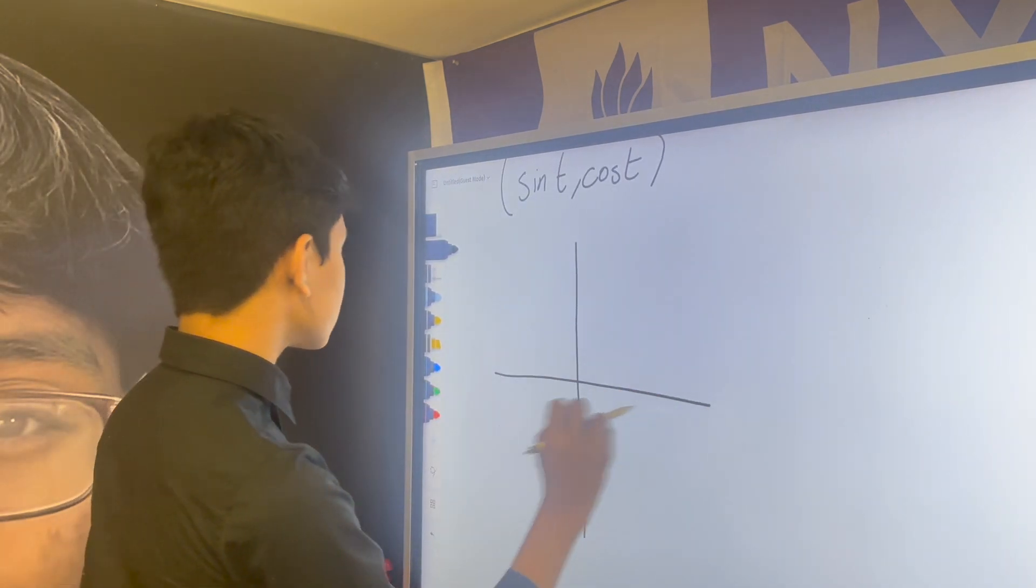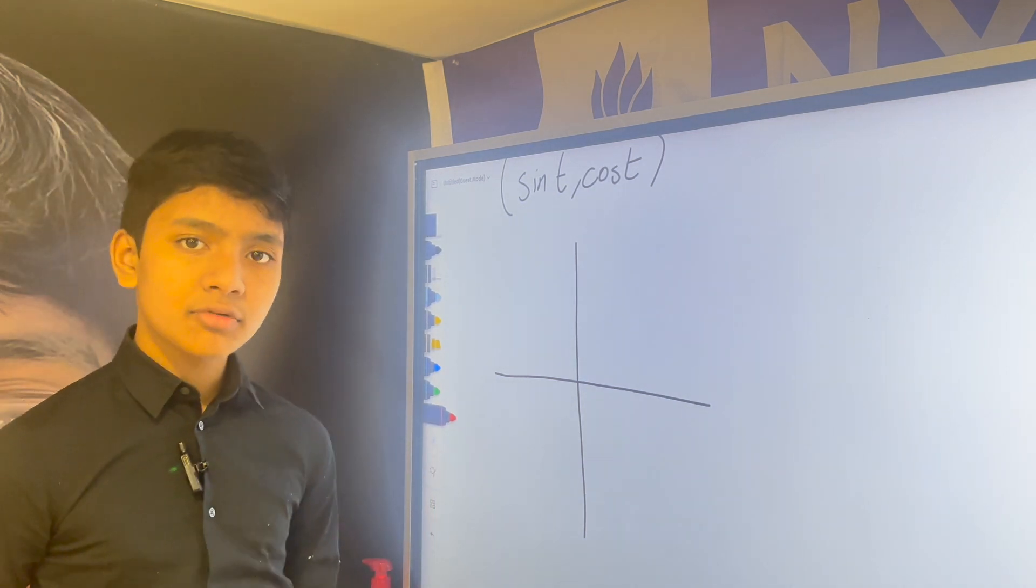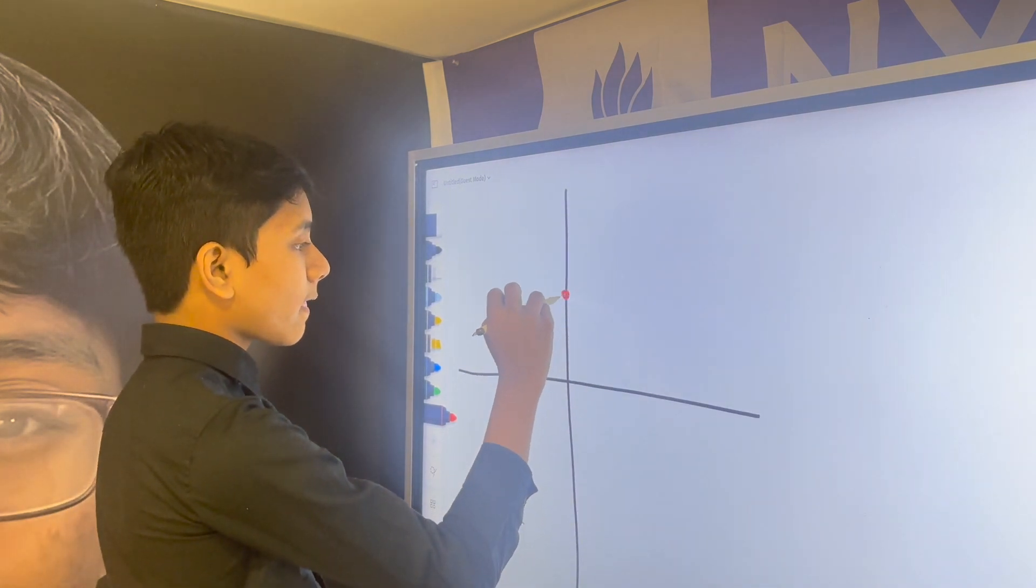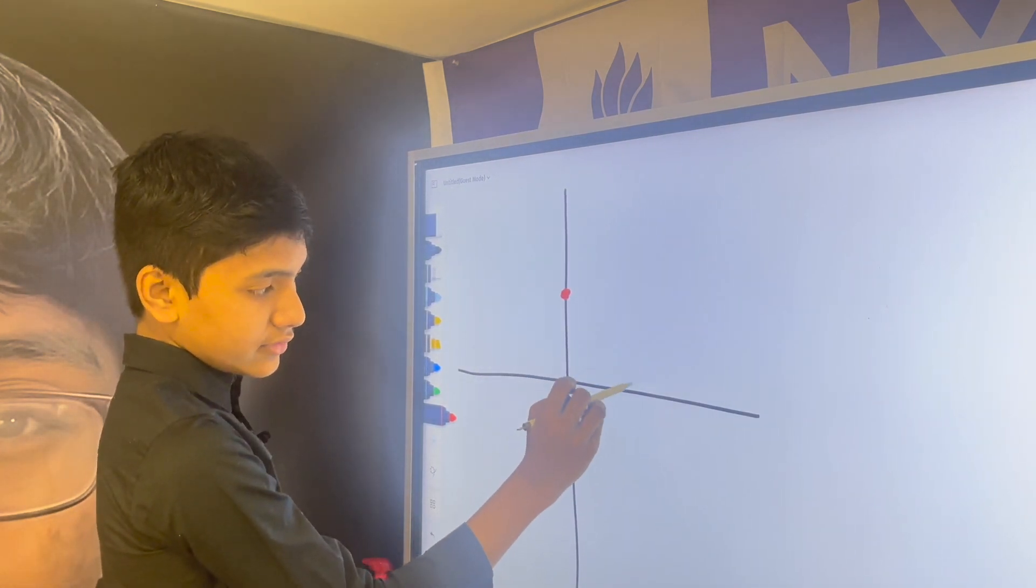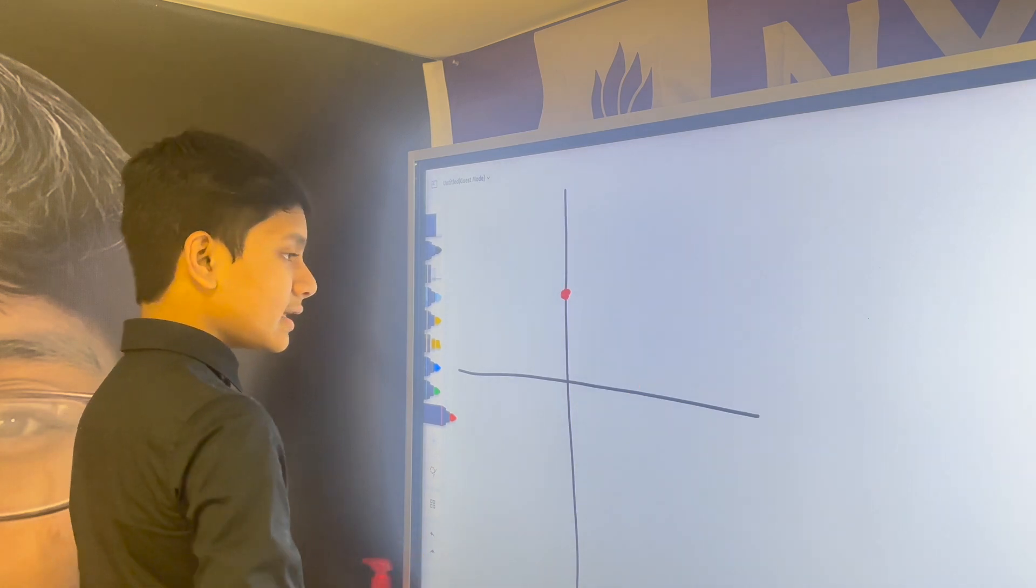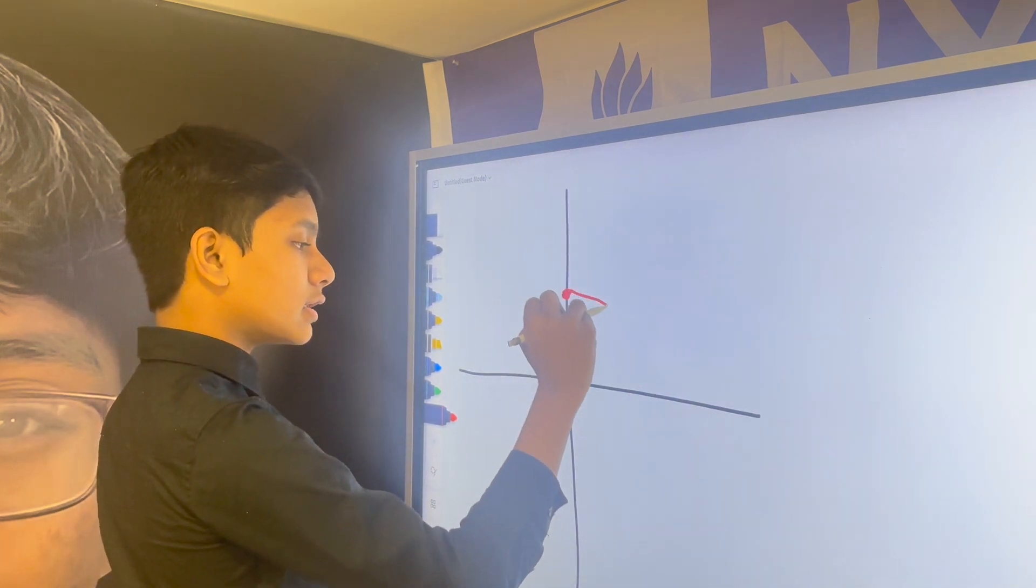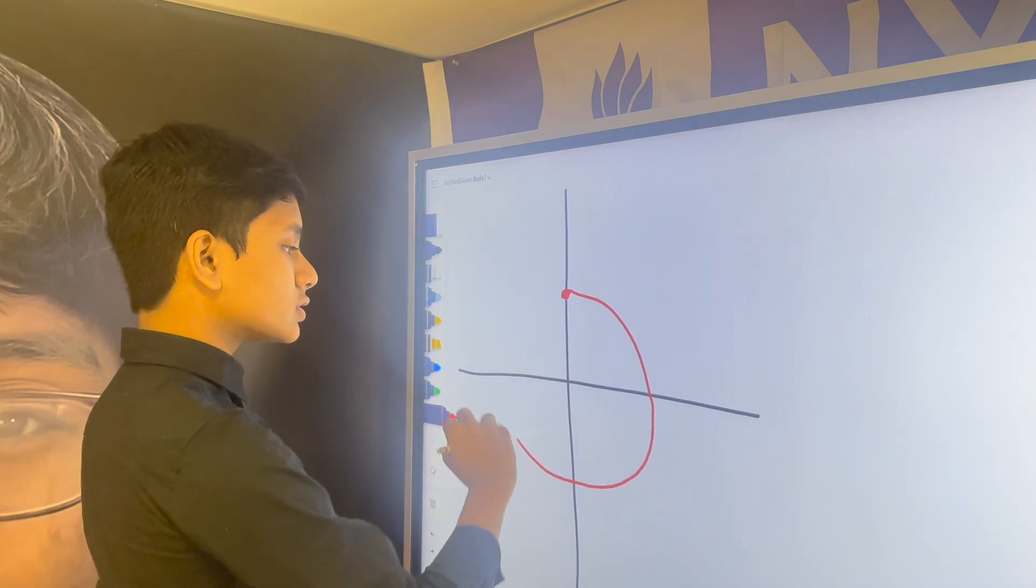So, of course, at t equals zero, where is it going to be? It's going to be at zero comma one. So, it's going to start from here instead of here like you might expect. And, which way is it going to go? It's going to go this way. So, it's going to draw clockwise.